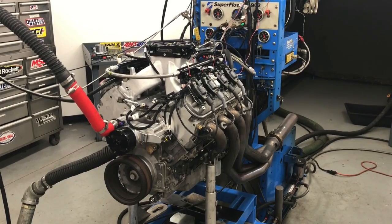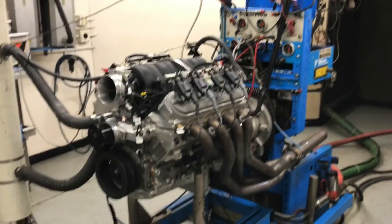By now, we all understand that a short runner intake makes power at high RPM and a long runner intake makes power at low RPM. The question is, does that change when we change the displacement?